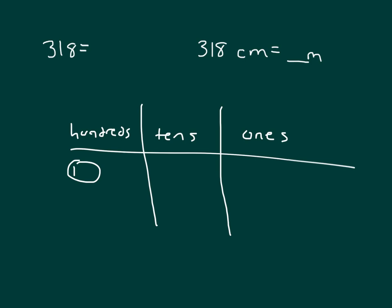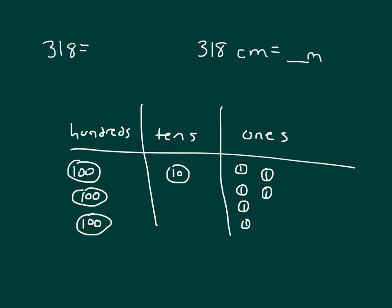Let's rename it using these disks. We're talking about a hundred, another hundred, and another hundred. We would have one ten and then eight ones. If I break that down, we would have three hundreds, and this ten is actually equal to ten ones — put it back together with the ones, that would be 18 ones. So in unit form, 318 equals three hundreds and 18 ones.